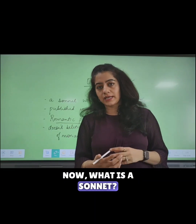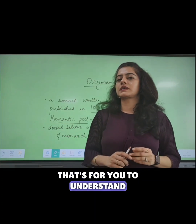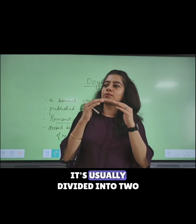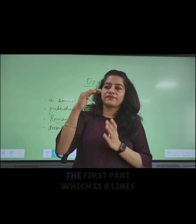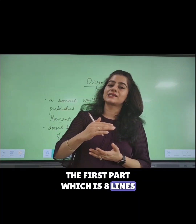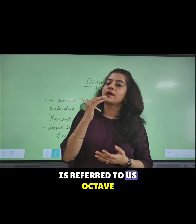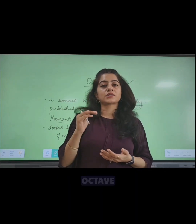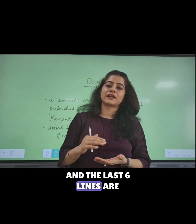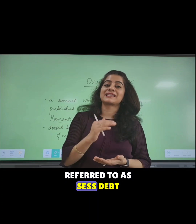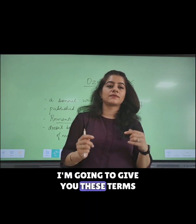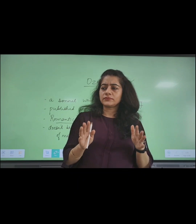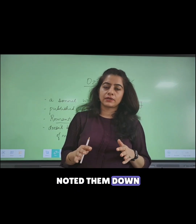Now, what is a sonnet? A sonnet is a 14-line poem usually divided into two parts. The first part, which is eight lines, is referred to as the octave. The last six lines are referred to as the sestet. These terms will be given again at the end of the poem, so don't worry if you haven't noted them down.